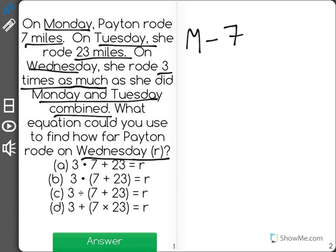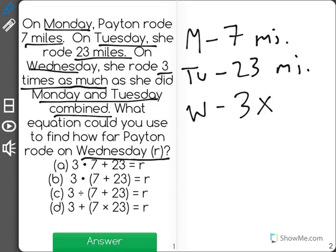We know on Monday, she rode 7 miles. On Tuesday, she rode 23 miles. On Wednesday, she rode 3 times the total of Monday and Tuesday.